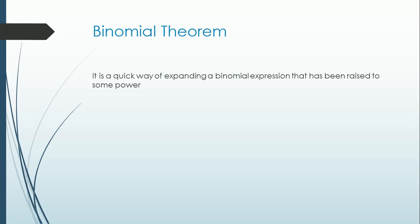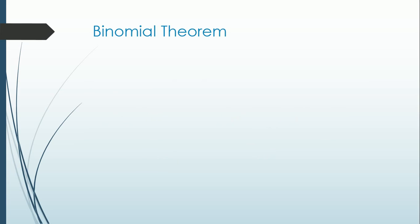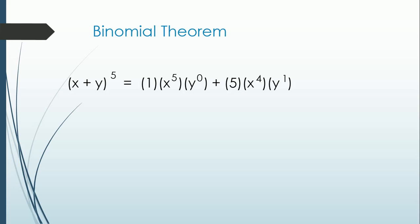The formula for the binomial theorem will be shown like this. To understand it more, let's try this example: quantity x plus y raised to 5. For the first term, the constant is 1. The degree of x should be the highest degree, which is 5, and the degree of y is the lowest, which is 0. For the second term, the degree of x should be decreasing, so the degree of x is 4.